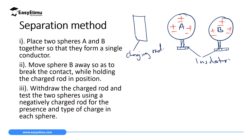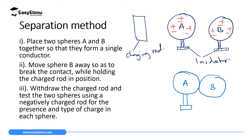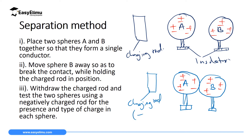You will also need a charging rod to charge the two bodies. To charge them, you need to bring the two balls together so that they behave like a uniform continuous conductor. Take ball A and bring it in contact with ball B, with their insulating material below. Remember both are electrically neutral — the number of protons is equal to the number of electrons. Then you bring your charging rod close to ball A. This charging rod is either positively or negatively charged.